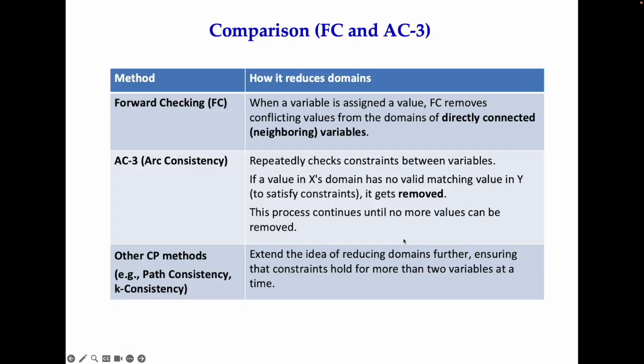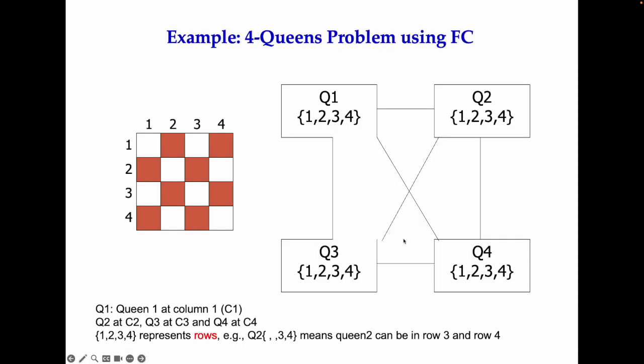Let's quickly do the four-queens problem using forward checking. I already did the four-queens problem using backtracking, and now I'm going to do it with forward checking. Previously I said queen 1 row 1, queen 2 row 2, queen 3 row 3, queen 4 row 4, then we move them in the columns to see which columns we can use, and we also added the constraint that they cannot attack each other diagonally.